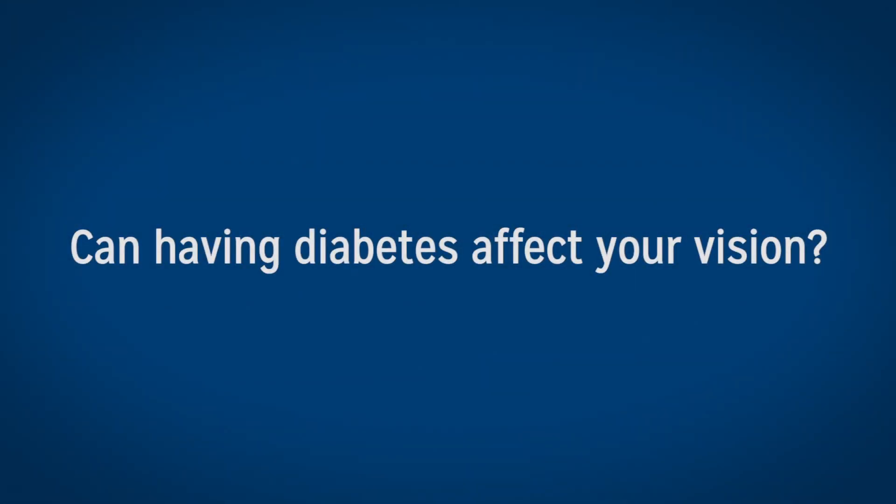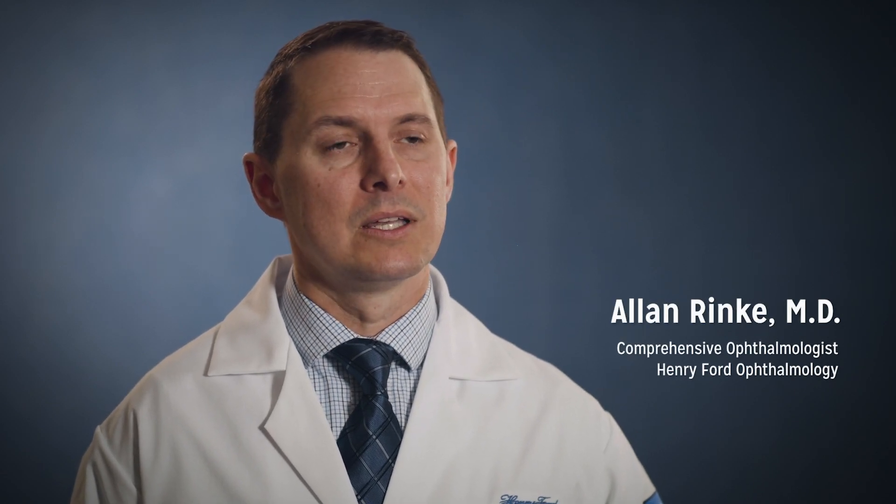Diabetes affects the eye by causing poor oxygenation in the eye's tissues, which can lead to different types of problems. Some of the more worrisome problems include swelling in the back of the eye or abnormal vessels that grow in the back of the eye, which can potentially bleed. These are the types of situations where somebody develops visual loss from diabetes affecting the eyes.